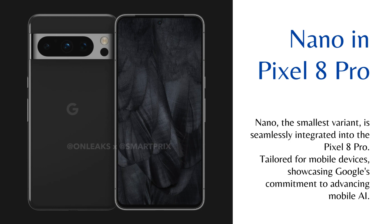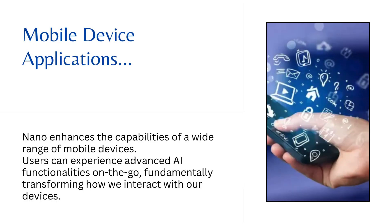The least capable variant is Nano. Nano is used for the Pixel 8 Pro — Google's phone series — and this Nano technology is being integrated into the Pixel 8 Pro. This Nano version is tailored for mobile devices, showcasing Google's commitment to advancing mobile AI. On mobile devices, Nano helps enhance the capabilities of a wide range of applications, so users can experience advanced AI functionalities on the go, transforming how we interact with our devices.